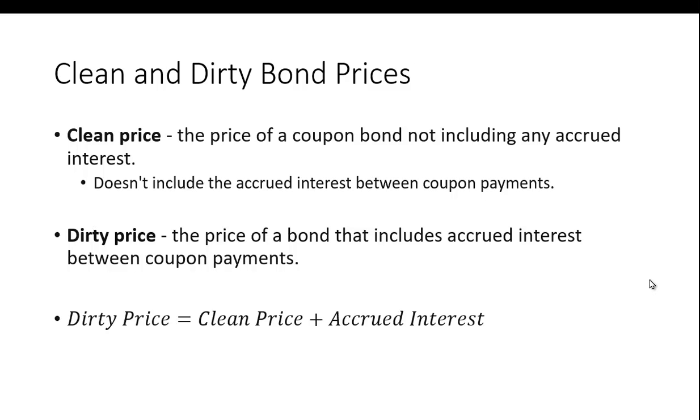You may have heard the terms clean and dirty bond prices. The difference is that one includes accrued interest and one doesn't. Bonds pay interest typically semi-annually, twice a year. So that means if you were to buy a bond between interest payments, you would be entitled to any accrued interest.